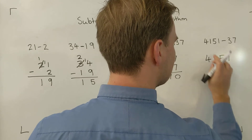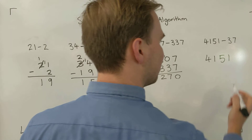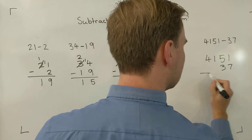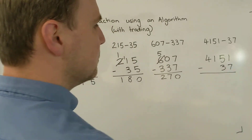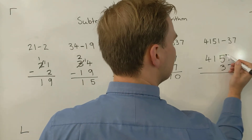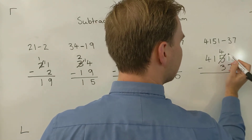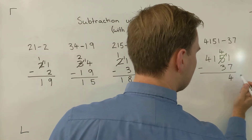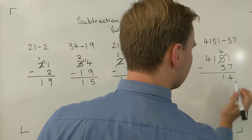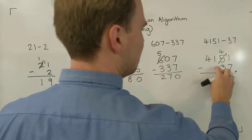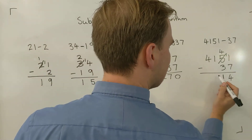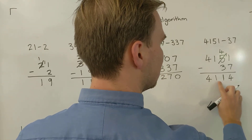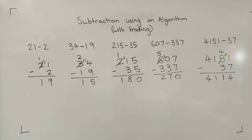Next one: 4,151 take away 37. It's a four-digit number and we're taking a two-digit number away, so I have to be really careful with my place value columns — 3 is in the tens column, 7 is in the ones column. Now, 1 take away 7 — cannot do it. Trading: I take one from there, that becomes a 4, bring that one down. Now 11 take away 7 leaves me with 4. Then 4 take away 3 leaves me with 1. In the hundreds and thousands columns there's nothing to take away, so 1 take away nothing is 1, and 4 take away nothing is 4. Answer: 4,114.